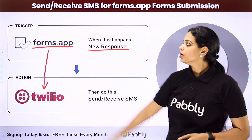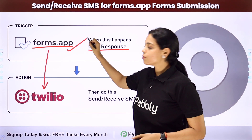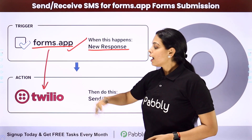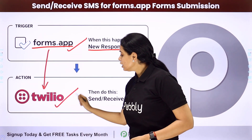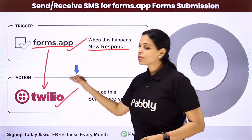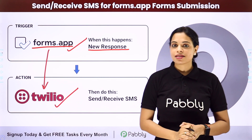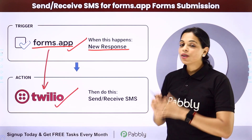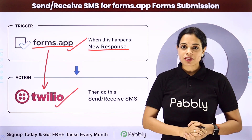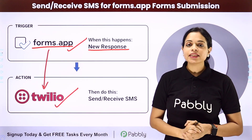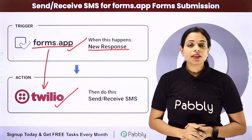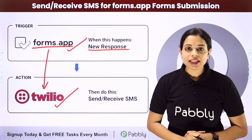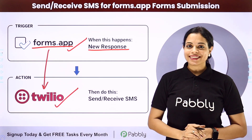Your trigger application will be forms.app and your action application will be Twilio, which helps you in sending SMSs. How can you do this yourself — integrate and automate this entire process? To understand that, let me take you to my screen.